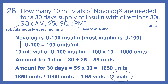So this prescription is for Novolog. Novolog is U100 insulin. Most insulin is U100, and what U100 means is that there are 100 units per milliliter. So a 10 ml vial of U100 insulin contains 100 times 10, so 1,000 units are in a 10 ml vial of U100 insulin.